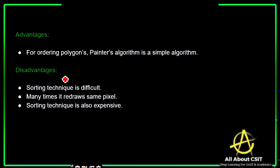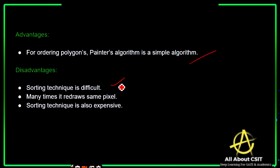The advantages of the painter's algorithm: it is a simple algorithm compared to others. The disadvantages are: the sorting technique is difficult because we need to find depth values and sort the objects accordingly. Many times it redraws the same pixel. Sorting is also expensive — not just difficult, but computationally costly as well.